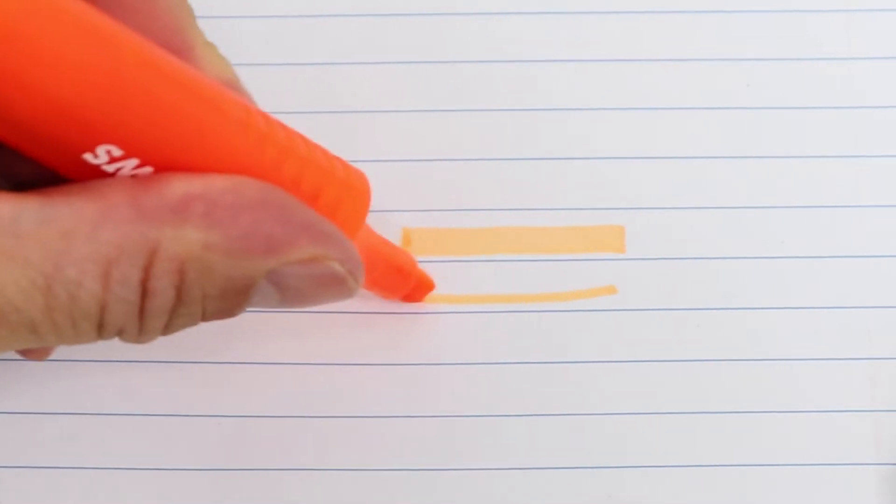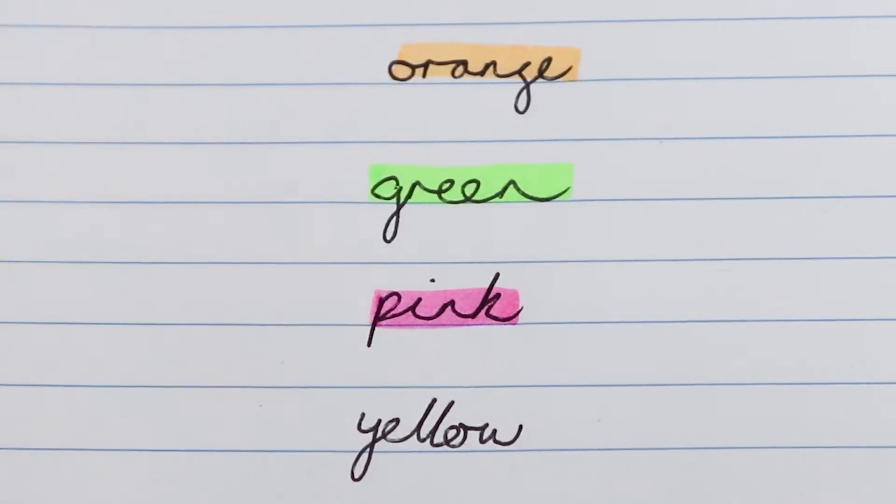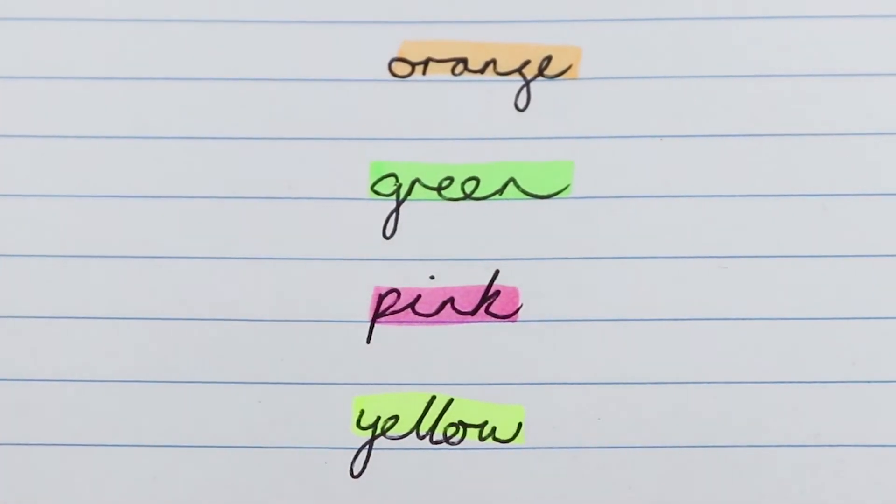Each with a 6mm chisel nib which can create different lines depending on how you hold it. These highlighters are perfect for color coding important notes or sections of documents thanks to their fluorescent ink which really stands out on your page.